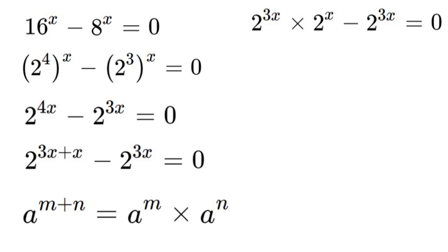Now why that is good for us is we can now factor out a 2 to the power of 3x, multiplied by our 2 to the power of x minus 1, and again that is all equal to 0.